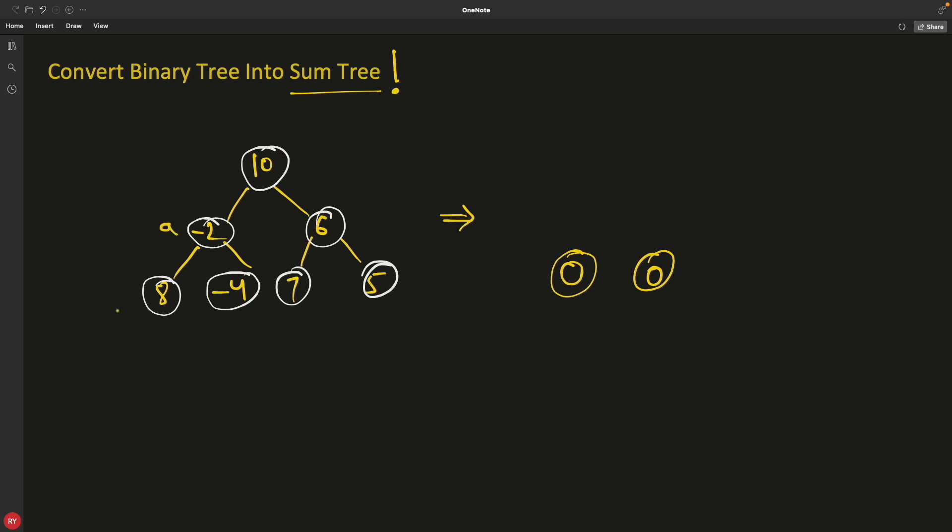you have this A, you have this B and this C. So here value would be B plus C, you will store B plus C at this location. So 8 minus 4,